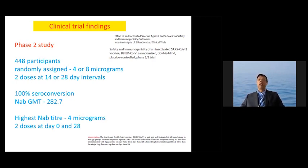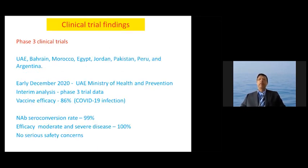The Phase I and Phase II trials were published in The Lancet and in the Journal of the American Medical Association. The Phase III trial was conducted in several countries, including the UAE, Bahrain, Morocco, Argentina, and others. In early December 2020, the UAE did an interim analysis of the Phase III trial data and reported a vaccine efficacy of 86% against the development of COVID-19 infection.